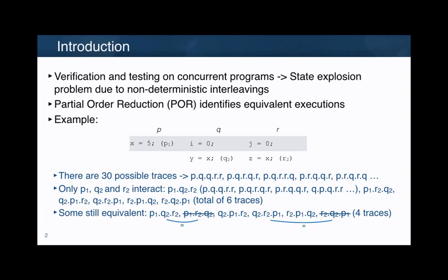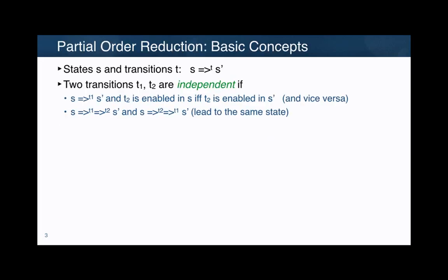If we have a closer look, we can see that these two events are not interacting, because they are reading a variable but not writing over it. Basically, we are interested in the final values of variables Y and Z. And depending on whether this statement is done before or in the middle, we will get different results. And there are only four different results.